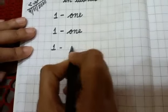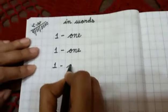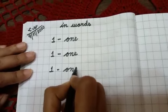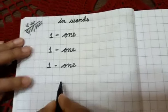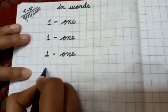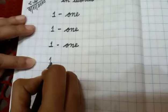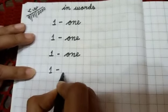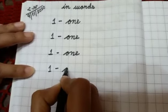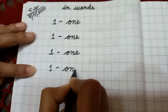Again 1. O N E. Again 1. Dash. And write the spelling of 1. O N E.